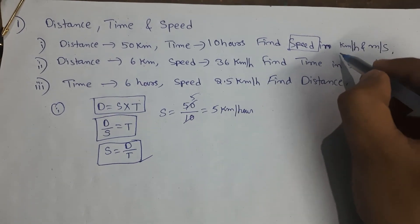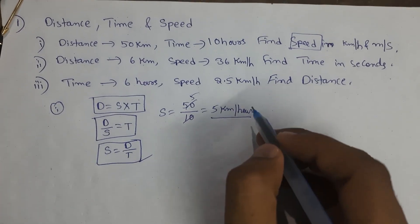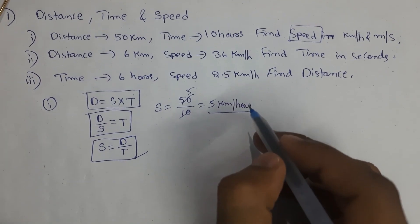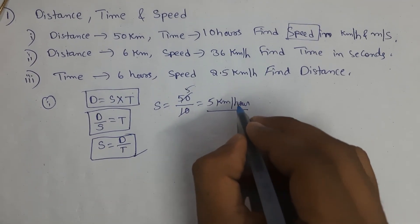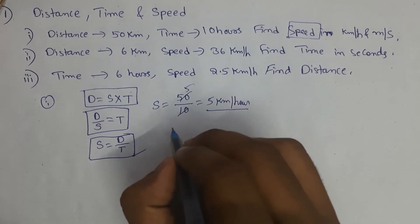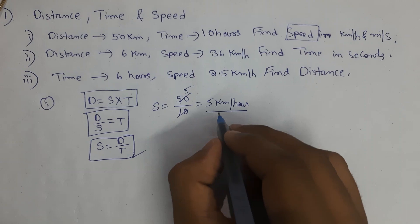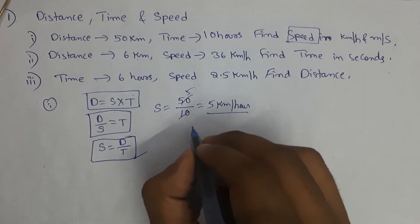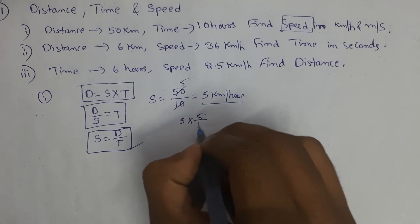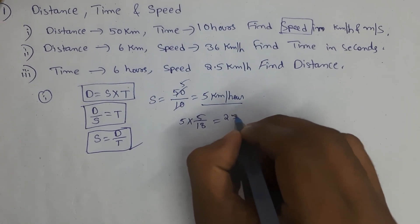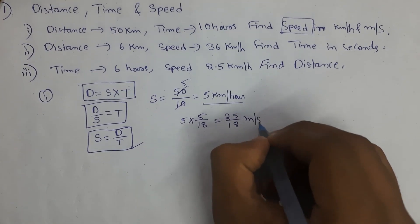Now it is in kilometers per hour. We want to find speed in meters per second. To convert kilometers per hour to meters per second, we already learned that we have to multiply by 5 by 18. So 5 multiplied by 5 by 18 gives 25 by 18 meters per second.